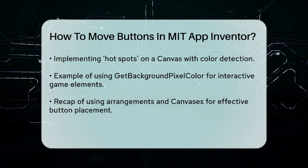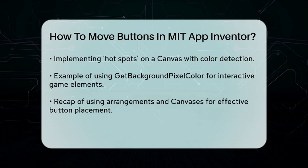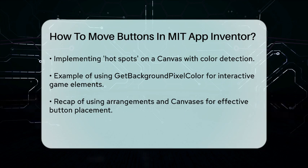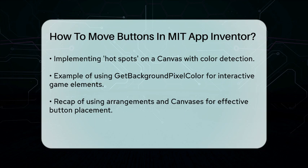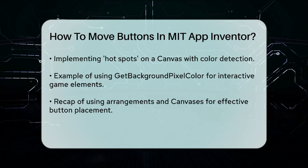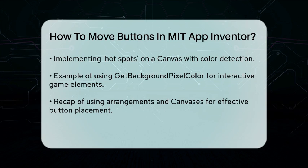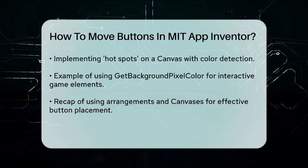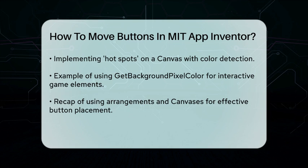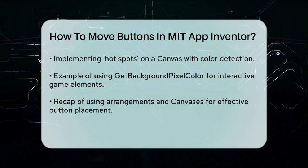In summary, to move buttons in MIT App Inventor, use arrangements to position them relative to the screen size, set alignment and size properties, and consider using canvases and color-based hot spots if you're working with background images. This way, your app will look great on any device.